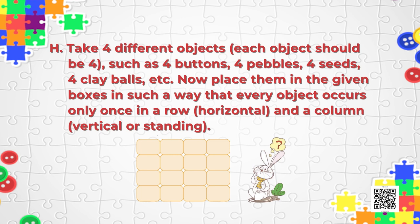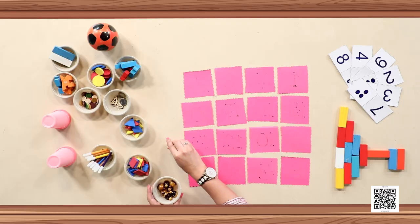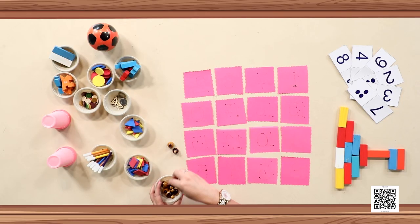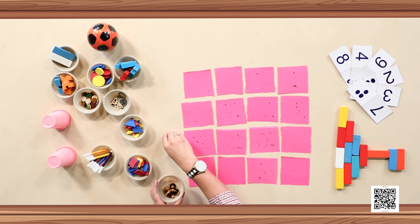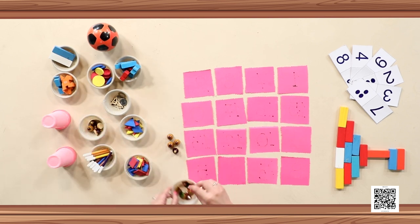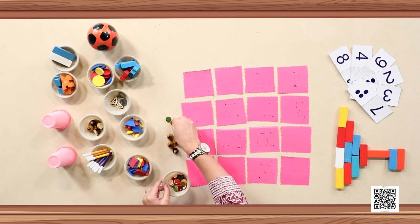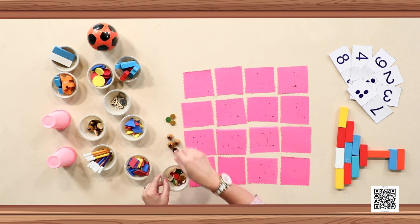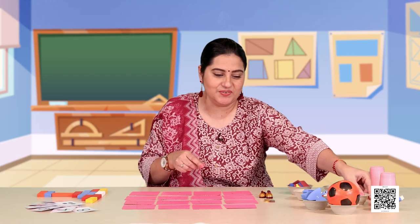Now you may not have clay balls or similar objects, so you can take your own objects. Let us take four of these interesting shape objects. And then I have buttons — let us take four buttons here. Now do you think I will be doing this for you? No! You have to do it on your own.